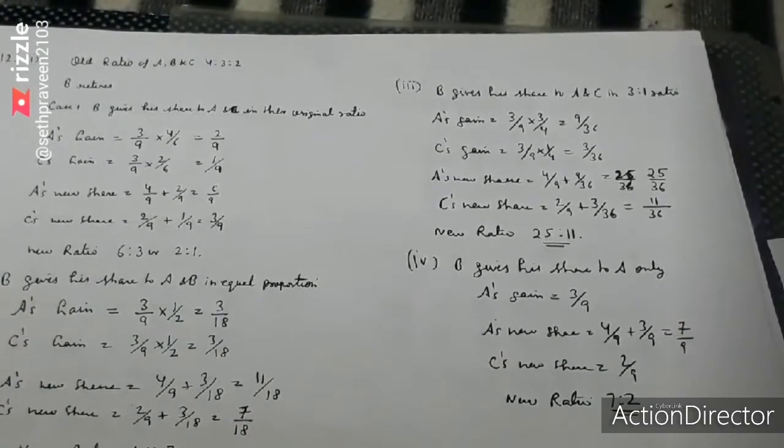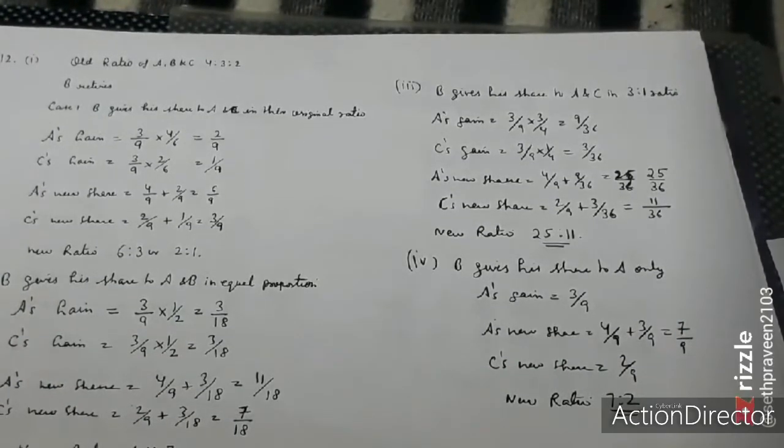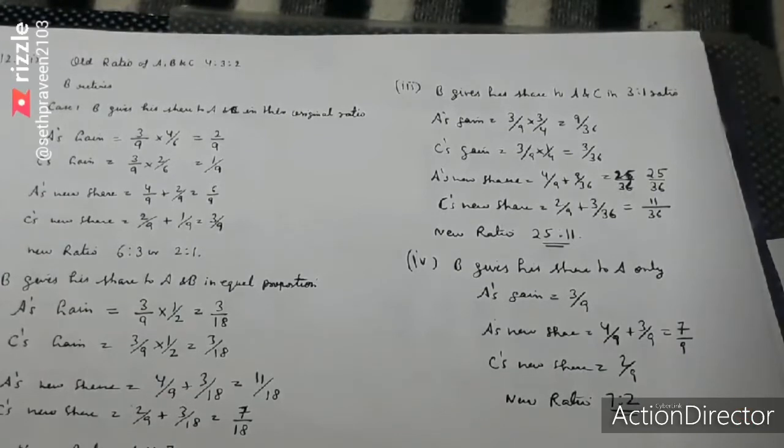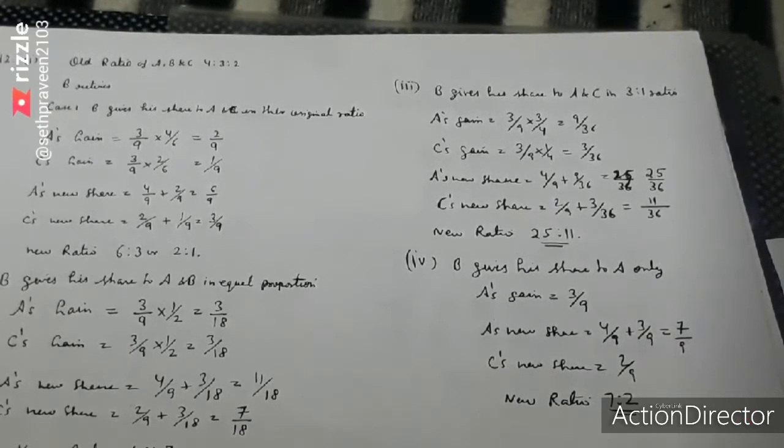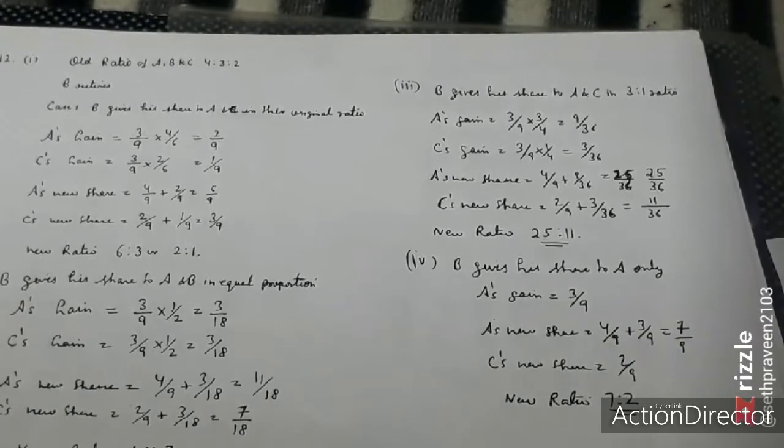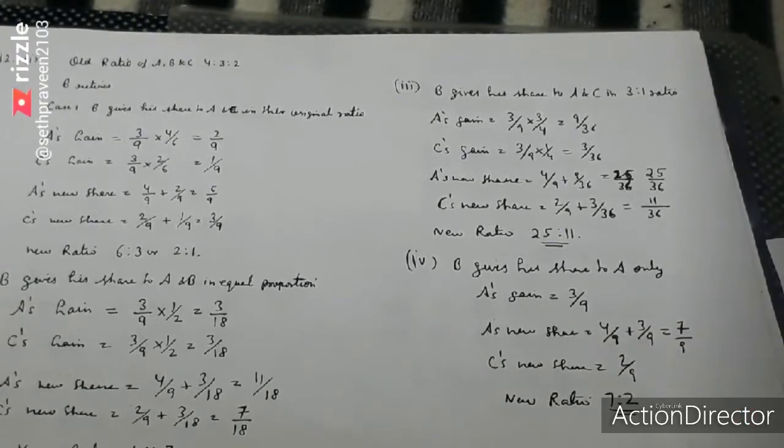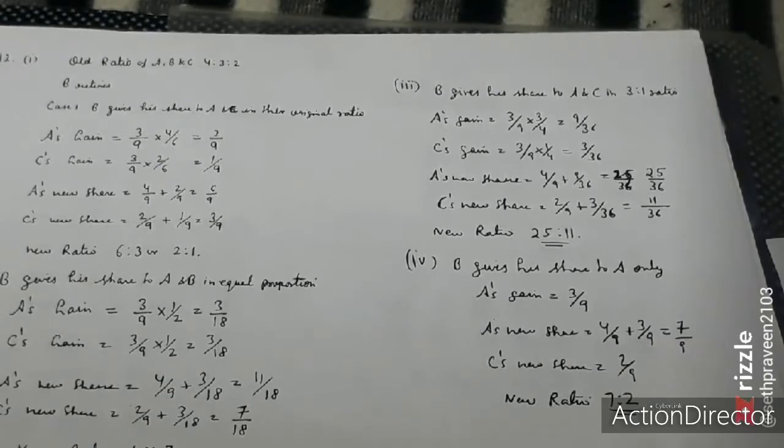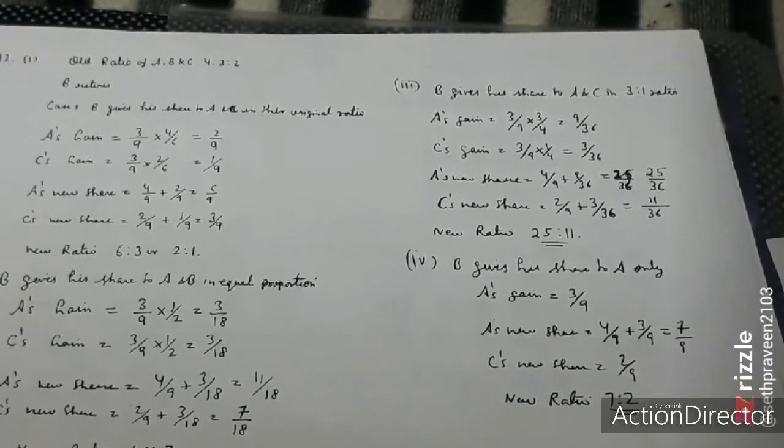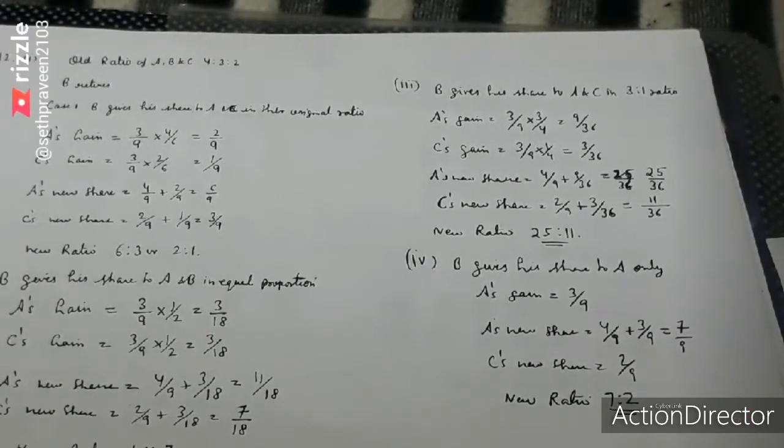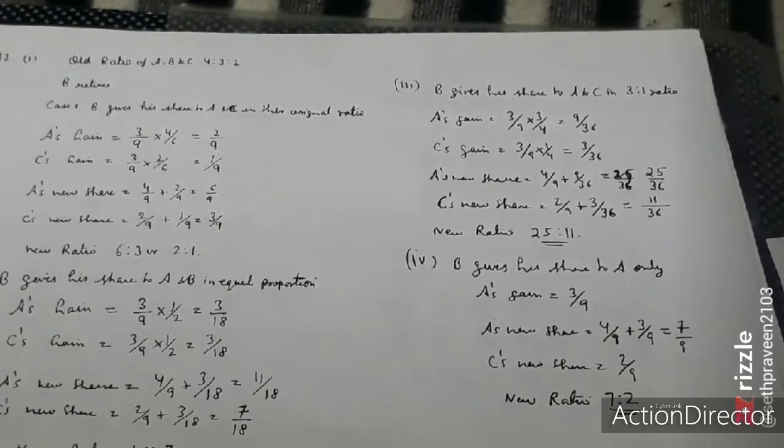B is giving up 3 by 9 share. A's new share becomes 4 by 9 plus 3 by 9, which is 7 by 9. C's new share remains 2 by 9, so the new ratio is 7 is to 2.